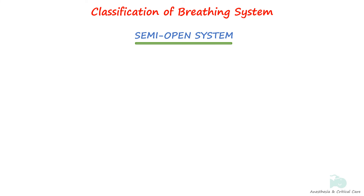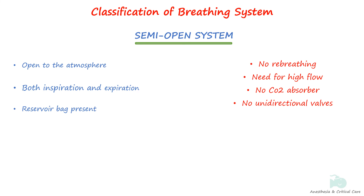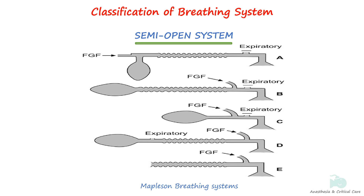In a semi-open system, the patient's respiratory system is open to the atmosphere both during inspiration and expiration through a reservoir and breathing tubes that are open to the atmosphere. The atmospheric air either carries or dilutes the anesthetic agents. Semi-open breathing systems have a reservoir breathing bag, no functional re-breathing of exhaled gases, and need high fresh gas flows to prevent inhalation of exhaled carbon dioxide. There is no neutralization of carbon dioxide and no unidirectional valves. These include Mapleson breathing systems, which will be discussed in detail in the next video.